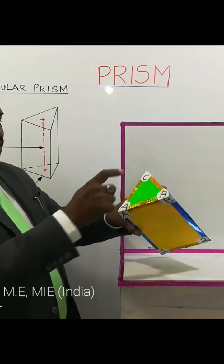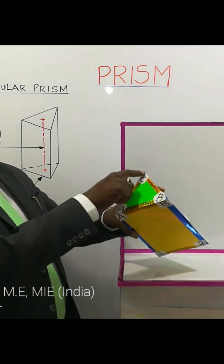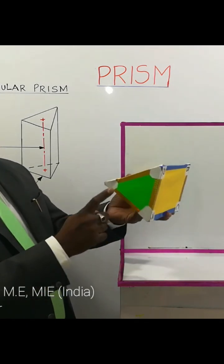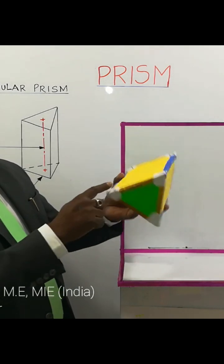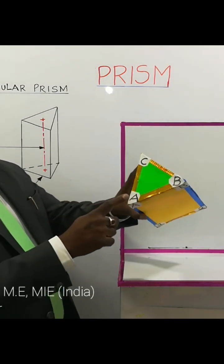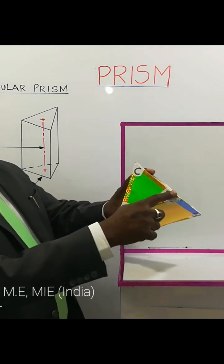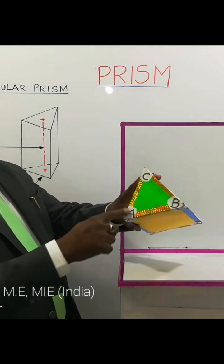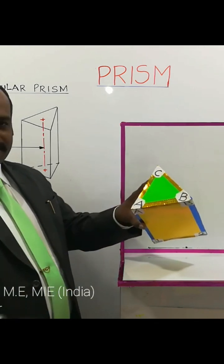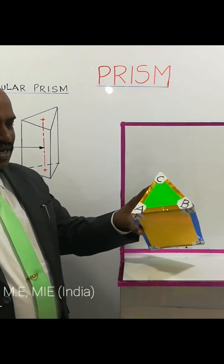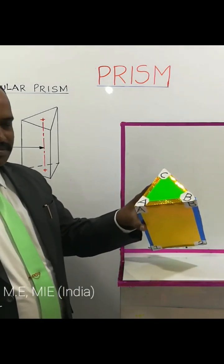Having three sides on its base, and the top surface is also having three sides. Hence the prism is called a triangular prism.